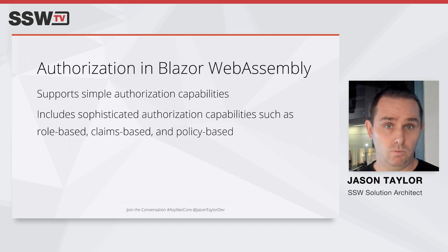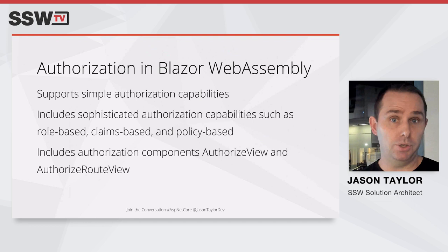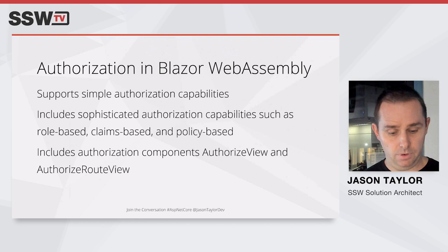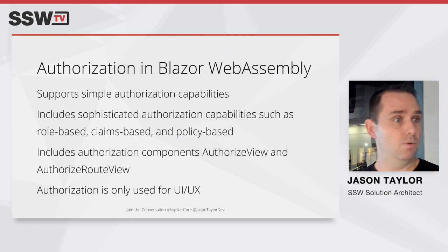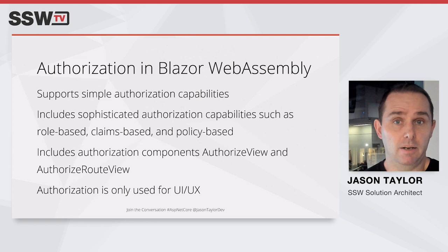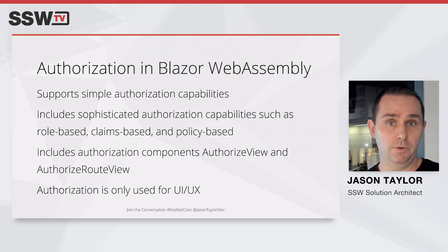You can use the AuthorizeView component to set up rendering of partial UI elements based on authorization check results. However, it's important to remember that with Blazor WebAssembly, these checks are only for the UI — they provide a good user experience but can't really be enforced because, as with all single page applications, the code is on the client's computer and they can easily bypass those checks. We need to enforce all authorization in the back end as well.